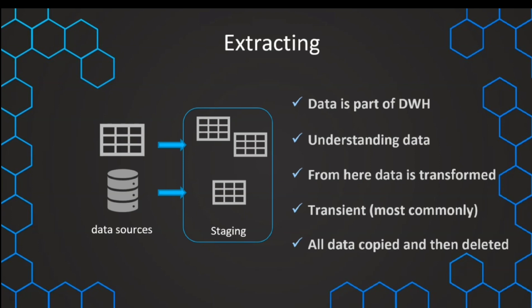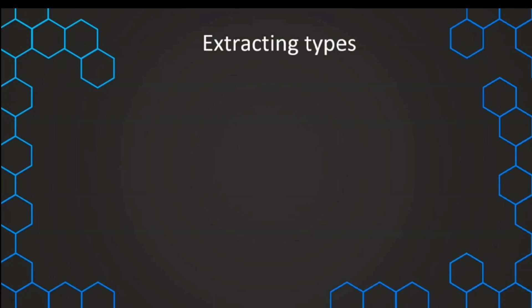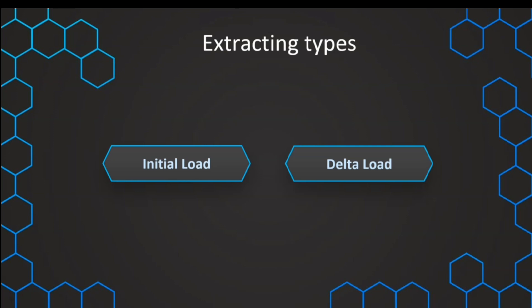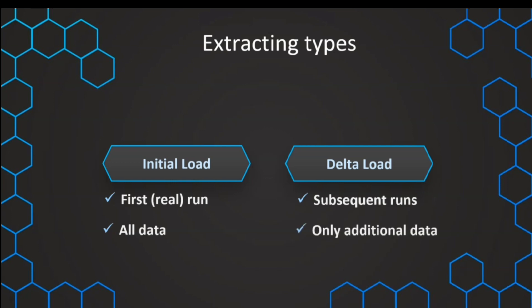With the fundamentals of data extraction covered, we have two different types: the initial load and the delta load. The initial load, as the name suggests, is the first real run of our ETL — the first time we load all of the relevant data. The delta load is the subsequent load, where we don't load all the data anymore, but only the additional new data that has occurred in the source system. In the next lecture, we'll dive deeper into how exactly the initial load and delta load work.